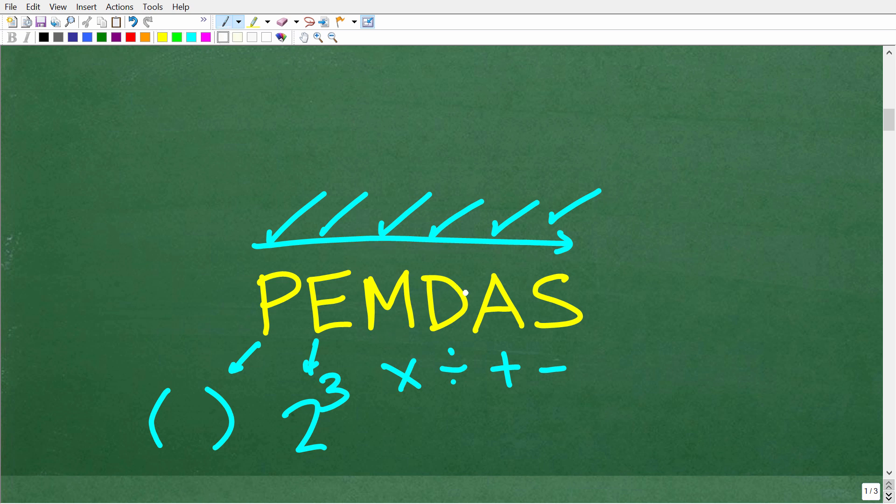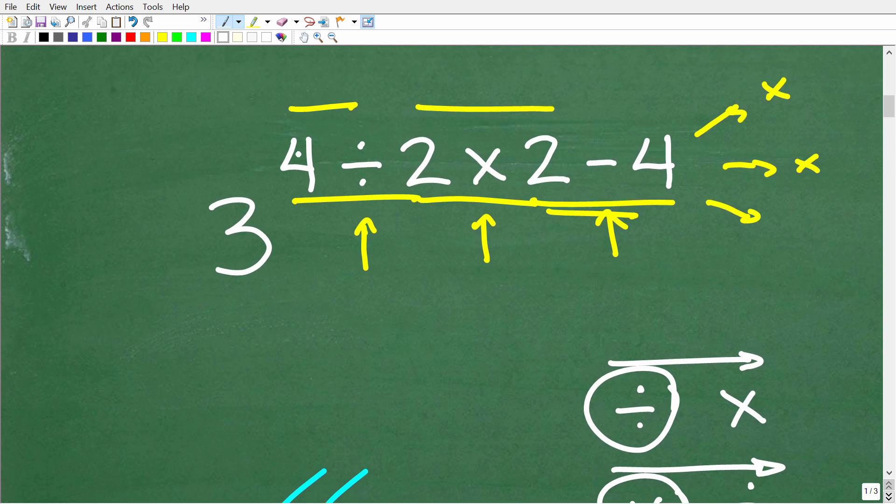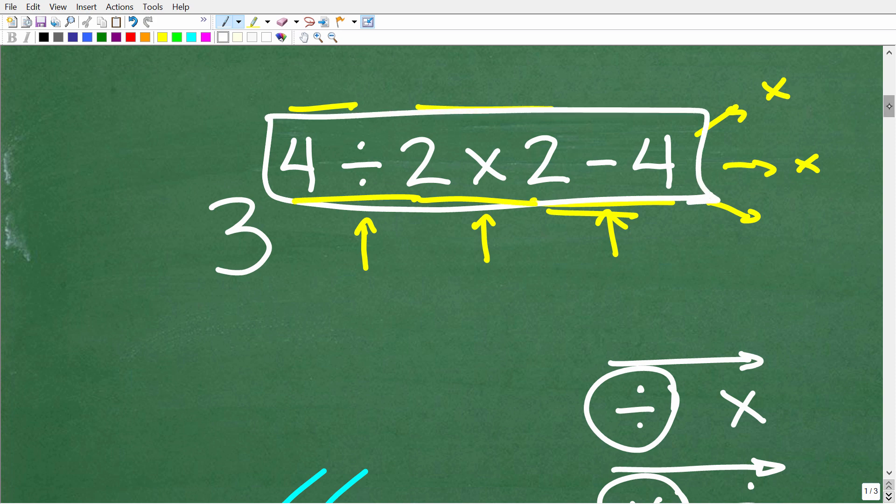After parentheses and powers, the next thing is any multiplication and division. If you have multiplication and division, you do whatever you see first from left to right. If you have division then multiplication, you do division first. If you have multiplication then division, you do multiplication first. Addition and subtraction work the same way.